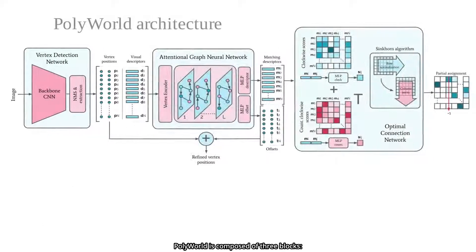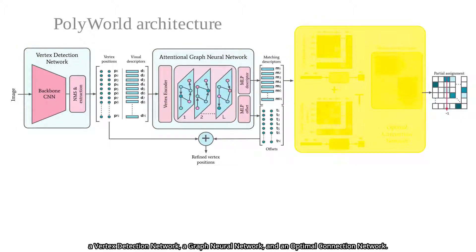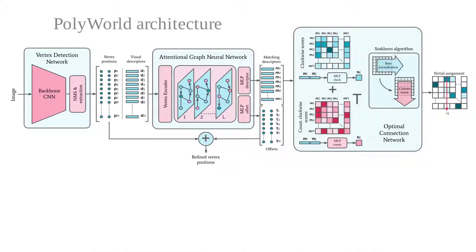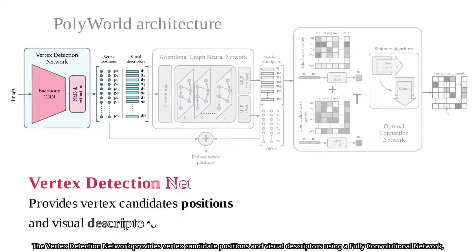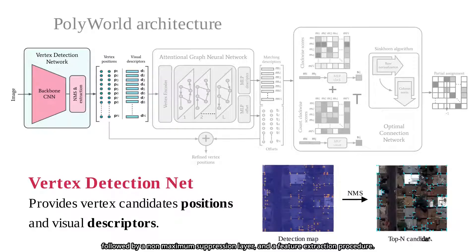PolyWorld is composed of three blocks: a vertex detection network, a graph neural network, and an optimal connection network. The vertex detection network provides vertex candidate positions and visual descriptors using a fully convolutional network, followed by a non-maximum suppression layer and a feature extraction procedure.